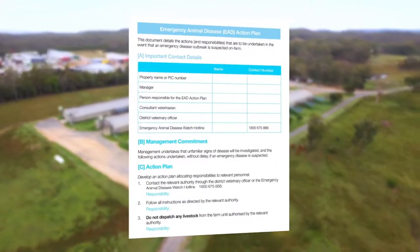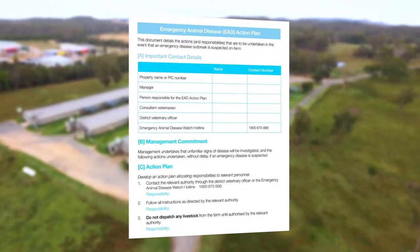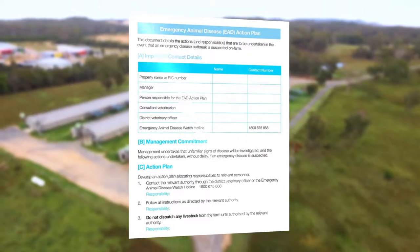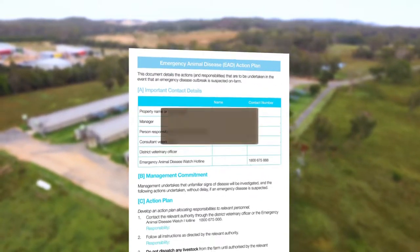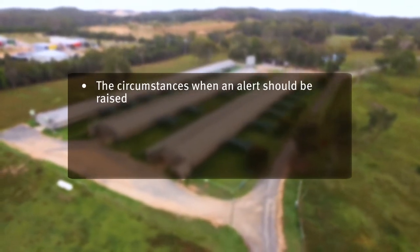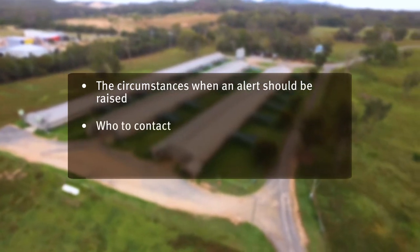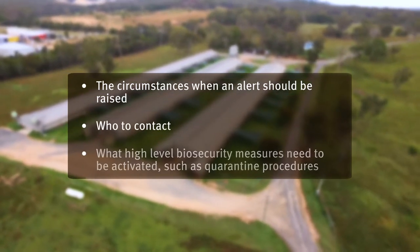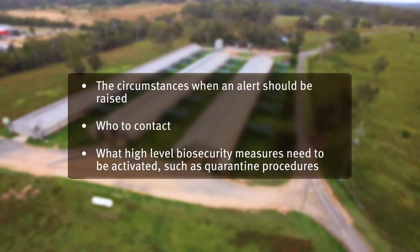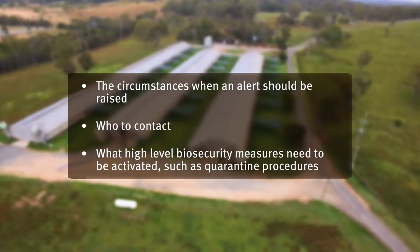An action plan for dealing with a suspected emergency animal disease outbreak must be available on-farm. This should include the circumstances when an alert should be raised, who to contact, and what high-level biosecurity measures need to be activated such as quarantine procedures.